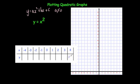4 squared is 16, 3 squared is 9, 2 squared is 4, 1 times 1 is 1, 0 times 0 is 0. Minus 1 times minus 1: a negative times a negative is a positive, so that's 1. Minus 2 times minus 2 is 4, minus 3 times minus 3 is 9, and minus 4 times minus 4 is 16.